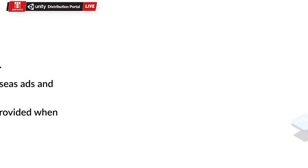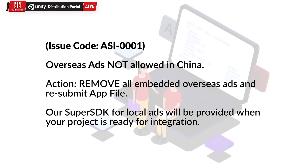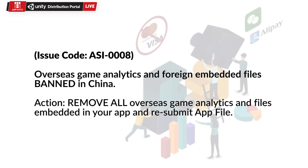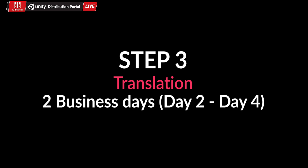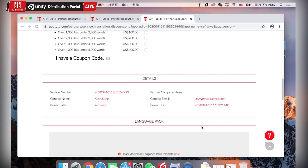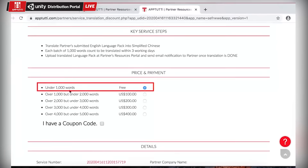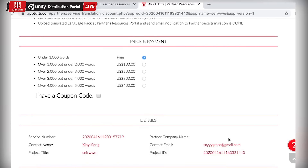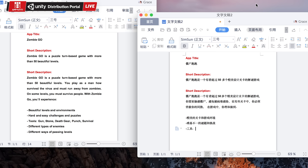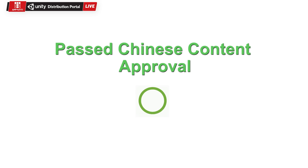Overseas ads are not allowed. App content must be in simplified Chinese. Overseas game analytics and foreign embedded files are banned in China. The next step for the App2T partner is to change their app content to simplified Chinese. They can use App2T's free translation service available on their partner dashboard. After receiving the Chinese language pack, integrating it into their app, and following the content review requirements, they will have passed the Chinese content approval.